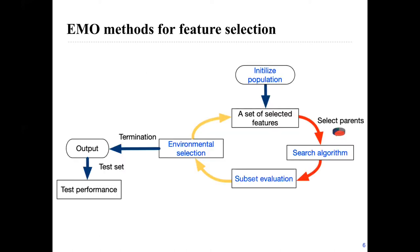Here I give a figure showing the basic procedure of an EMO-based feature selection method. It mainly includes four parts: the initialization, the search algorithm, the subset evaluation, and the environmental selection. When the stopping criteria is met, we get test performance based on the obtained feature subsets from training. In this work, we are mainly focused on the environmental selection part.